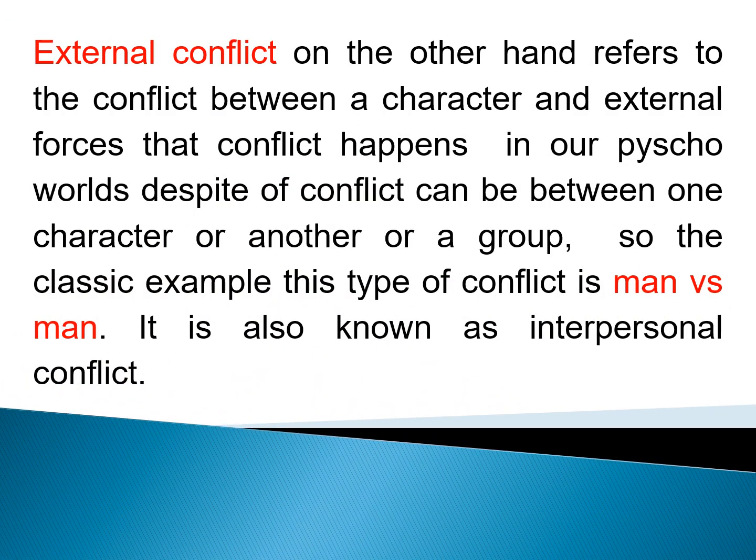What is External Conflict? External conflict, on the other hand, refers to the conflict between a character and external forces — that conflict happens in our physical worlds. It can be between one character and another, or a group. The classic example of this type of conflict is man versus man, also known as interpersonal conflict.